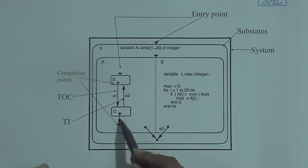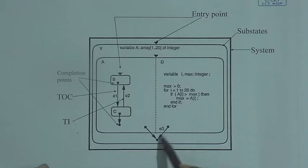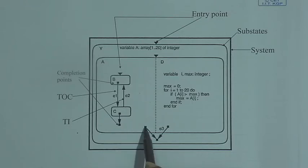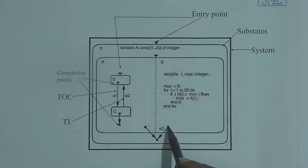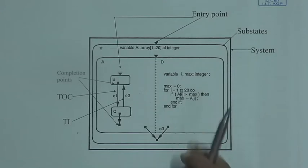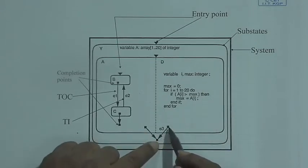There is a transition from C to the end, which is obviously a completion. Event E3 leads to that completion. When will the entire behavior Y be completed? The behavior will be completed when behavior A is completed, and behavior A is completed when C is completed. But the entire behavior Y will be completed only when D is also completed. So if D is completed and event E3 occurs, then we come out. If this part has completed but E3 has not yet occurred, we wait; only when both complete do we proceed.